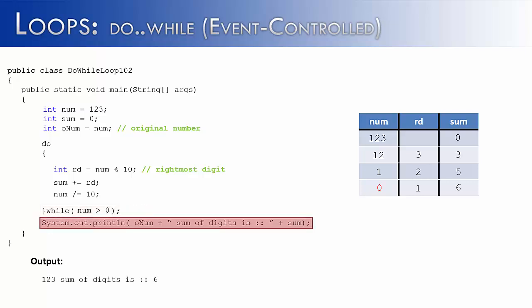And it would say 123 sum of digits is 6, which is the correct output that we're going for. And hopefully you can see this would work with all integers, not just the 123 that we gave as an example.